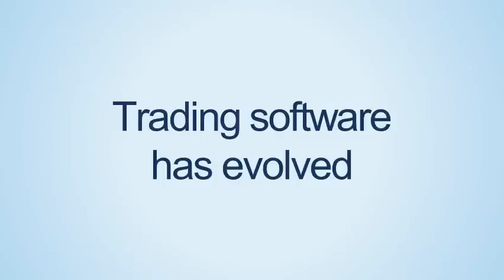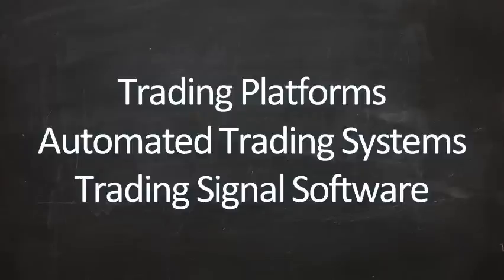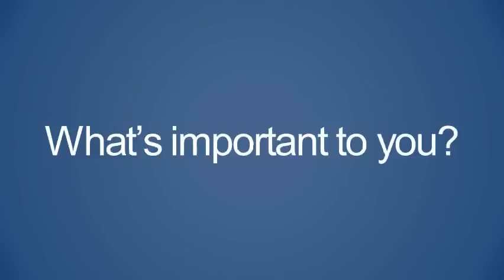Over the years, Forex trading software has evolved from simple charts and Forex robots all the way to fully automatic trading applications that make it easy for anybody to enter the market. Many of the advancements can be broken down into the following categories: trading platforms, automatic trading systems, and Forex trading signals. Let's break down each section and then wrap up with the attributes you may want to consider when determining the best software for yourself.